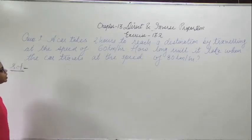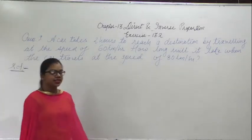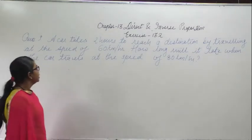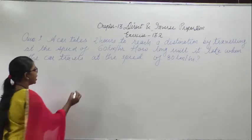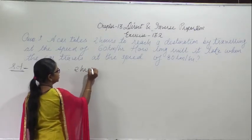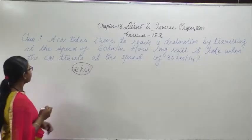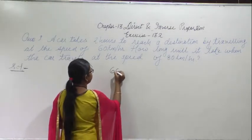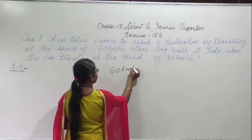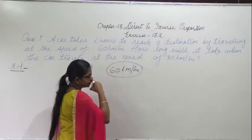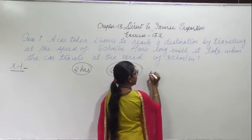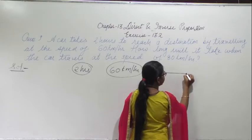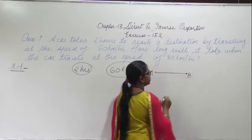In this question it is saying: a car takes 2 hours to reach a destination by travelling at the speed of 60 km per hour. So a car takes 2 hours to reach the destination. Suppose this is point A, and when it starts travelling it will reach after 2 hours at point B.